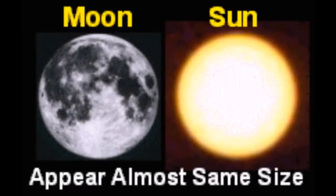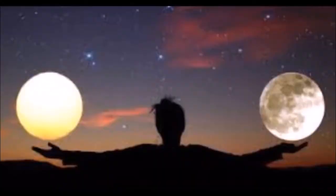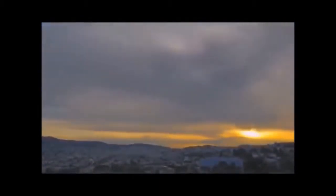The Sun and Moon appear to be the same size because they are the same size. Mainstream science wants you to believe that the Sun is 400 times bigger than the Moon and 400 times farther away, and that this is just a coincidence. It is fairly obvious that the Sun and Moon are both circling overhead, are both equally balanced opposites, and are the same size.